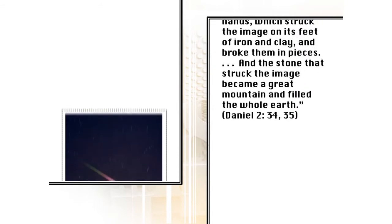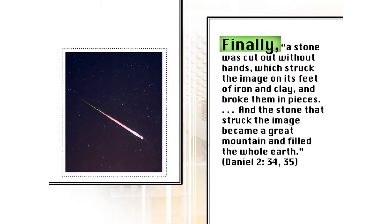But then we come to the last part, and that's the part I want to focus especially on. All these kingdoms in Daniel 2 — the gold and the silver — they come and go, and then finally a stone was cut out without hands, which struck the image on the feet of iron and clay and broke them into pieces. The stone struck the image and became a great mountain that filled the whole earth. That's Daniel 2:34-35. That's how it ends.